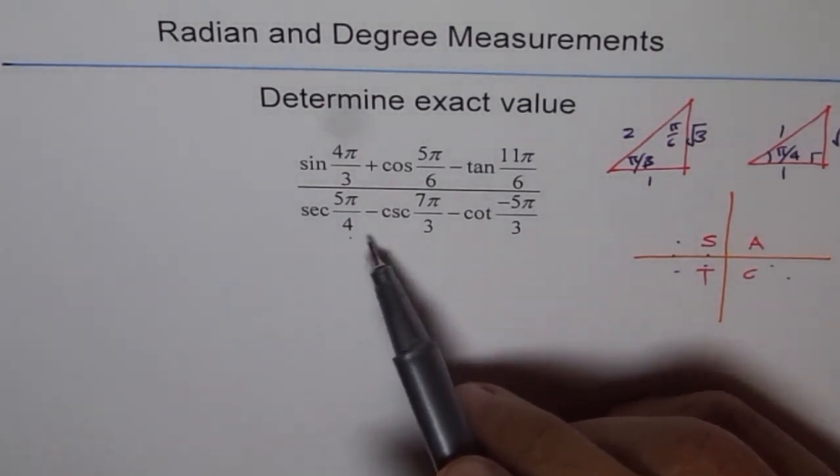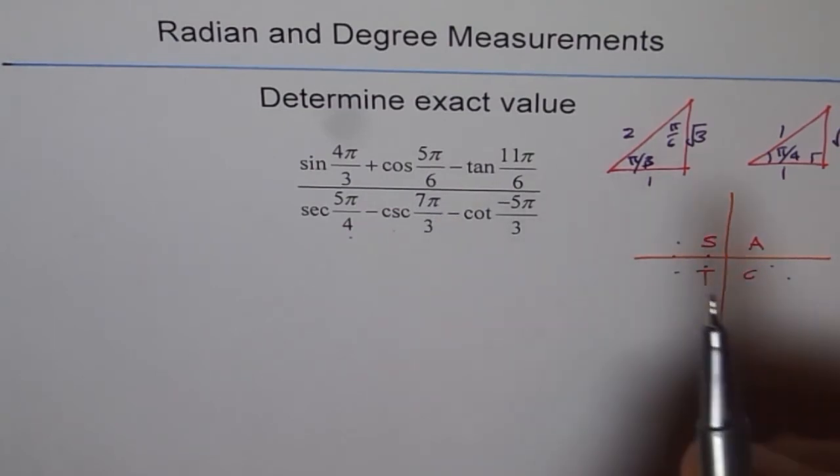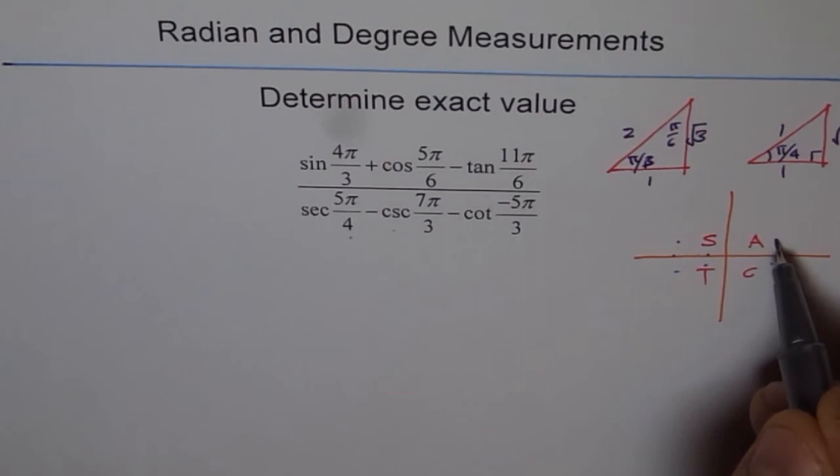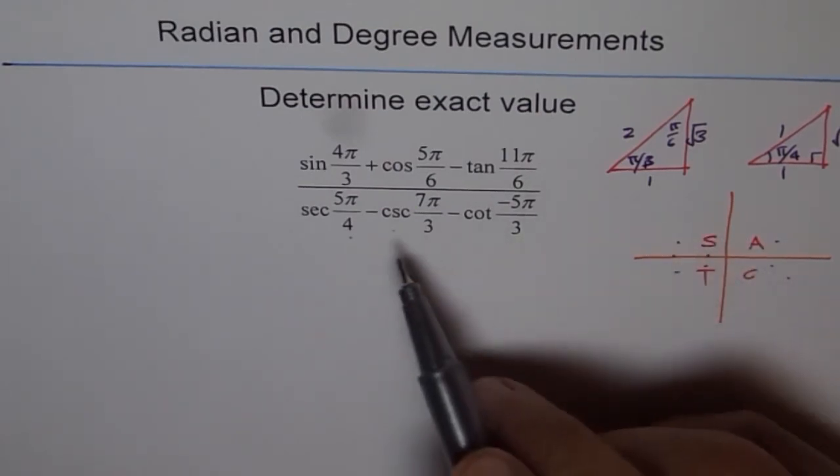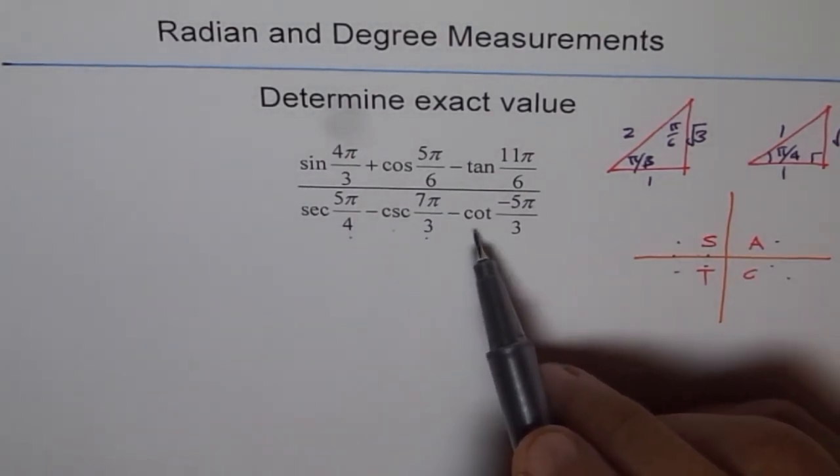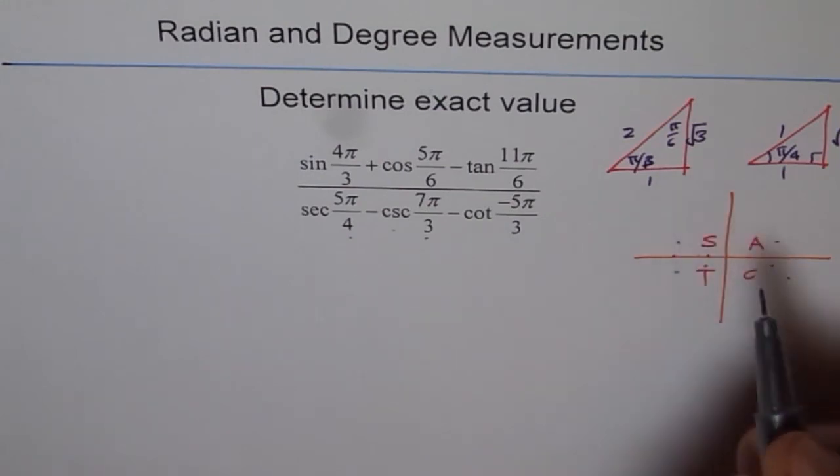Cosecant 7π/3, so 3 here and 3 is 6, 7th one again back this place, right, one full circle plus one, is going to be positive with related acute angle of π/3.